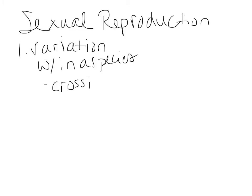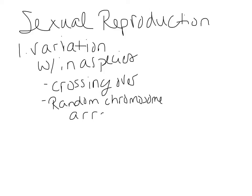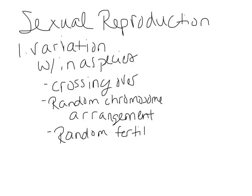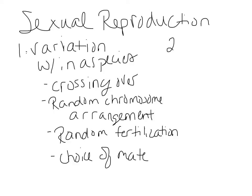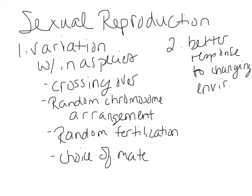Sexual reproduction increases variation through the processes of crossing over, the random chromosome arrangement — which we'll talk about when we get to metaphase of meiosis — and random fertilization, where any sperm can fertilize any egg. You also have behavior: the choice of mate has an impact on variation within the species. Sexual reproduction responds better to a changing environment because there's more variation within the population.